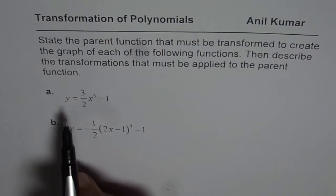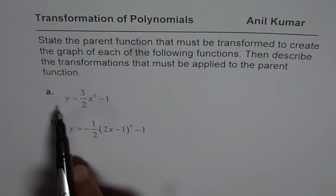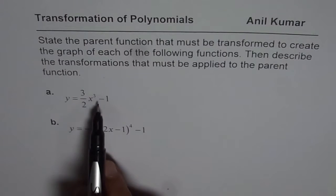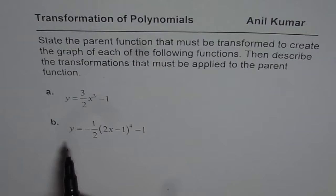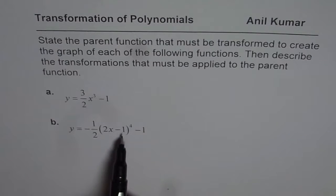So we are given two functions here. The first one is y equals 3 over 2x cubed minus 1. The next one is y equals minus half times 2x minus 1 to the power of 4 minus 1.